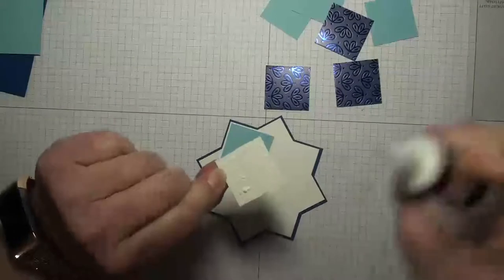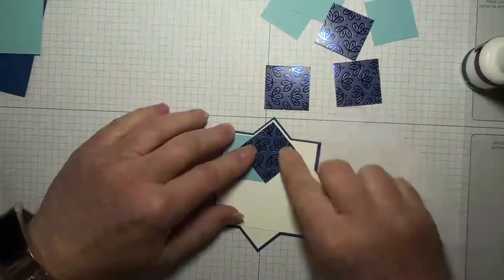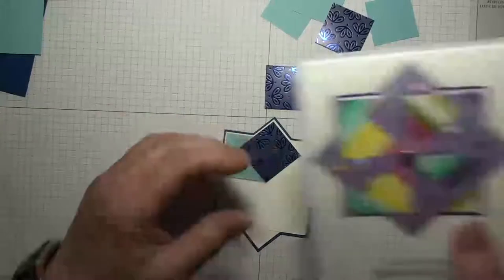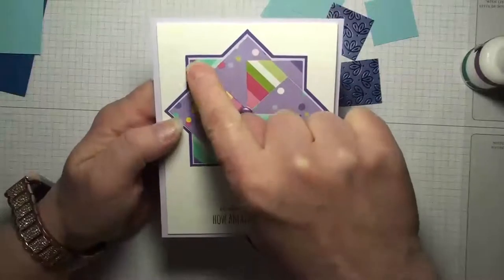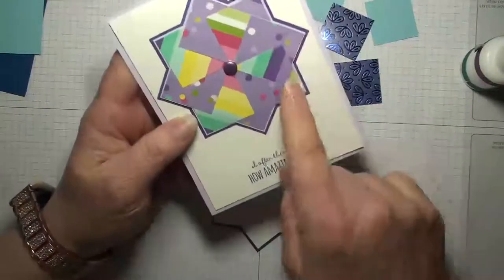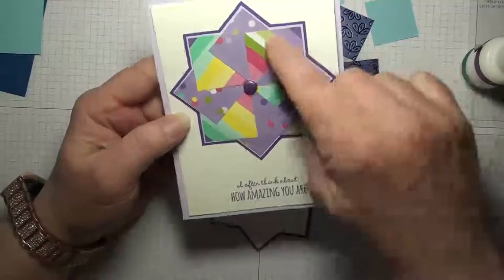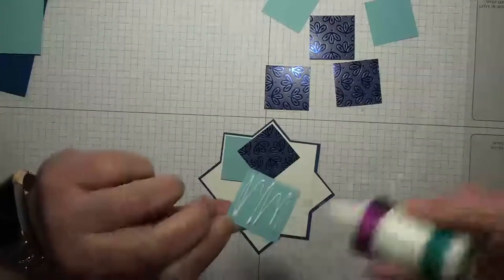So then we're gonna keep going around. Now if you have a directional paper you need to make sure decide which direction you're gonna go and I'll show you with this one. This one I have my stripes and I decided that I wanted to have these stripes going sideways all the way around. So you notice that I have this no matter which way you turn it the stripes are going sideways across the point. So that's something to think about as you're putting your squares down.